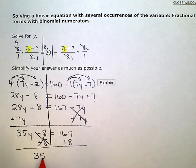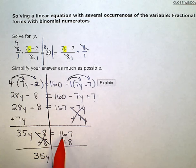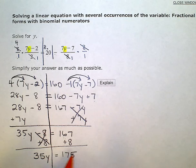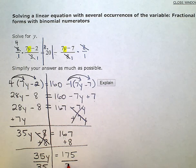After simplifying, I have 35y on the left and 167 plus 8 is 175 on the right. The last thing I need to do is divide out my coefficient of 35 there. I'm going to divide both sides by 35 to eliminate the coefficient here.